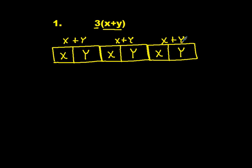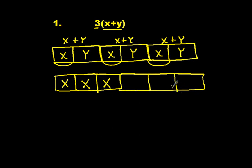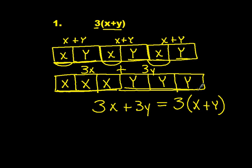Now write the expression another way using the distributive property. Group the x's together: x, x, x. Then group the y's together. Here I have 3x plus 3y, which can be written as 3x plus 3y — also equivalent to 3 times (x plus y). We have 3 x's and 3 y's, which makes them equivalent.